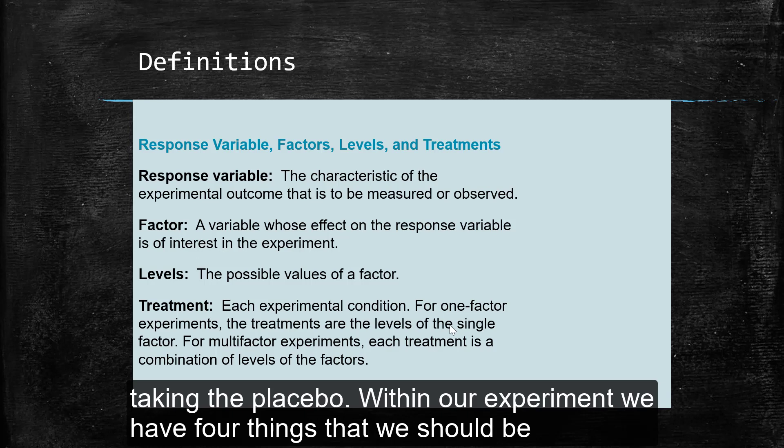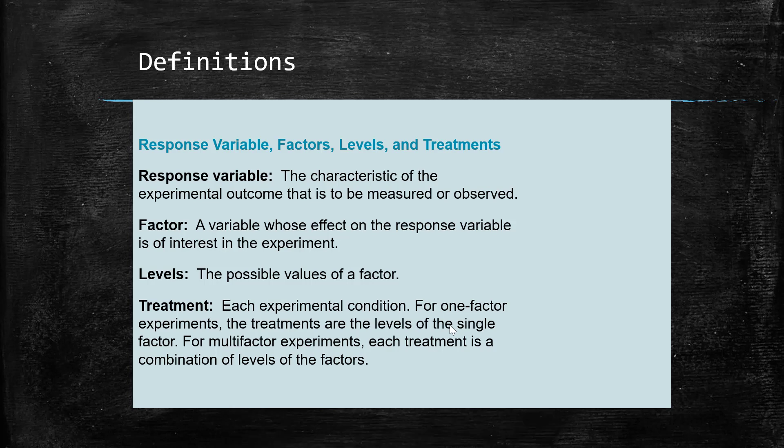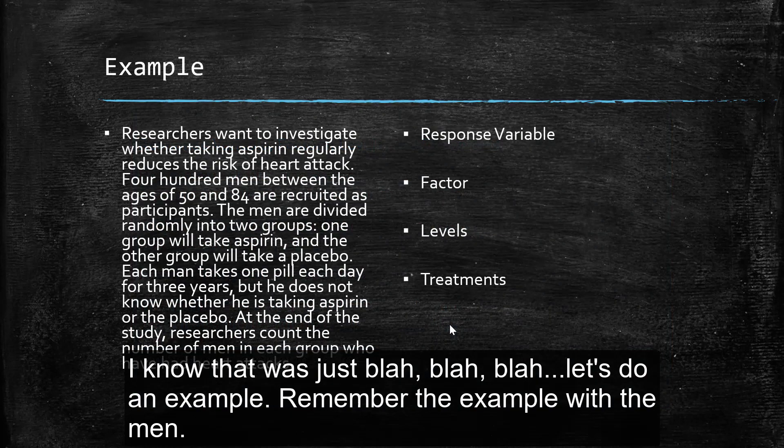Now, within our experiment, we do have four things that we should be able to pull out of an example. For example, the characteristic of the experimental outcome that is to be measured or observed, that's a response variable. The factor is a variable whose effect on the response variable is of interest in the experiment. Levels, the possible values of a factor, and the treatment is each experimental condition.